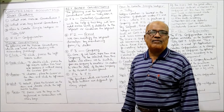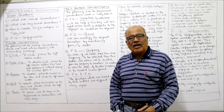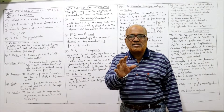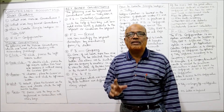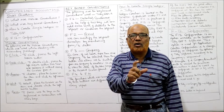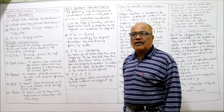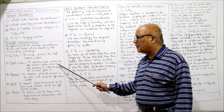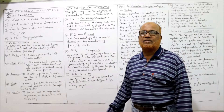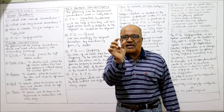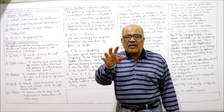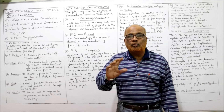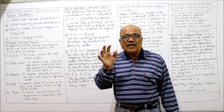Every mouse has two buttons — a left button and a right button. Click means to press the left button of the mouse. Double click means to press the left button of the mouse two times and release it without moving the cursor from that position. Keep the cursor at a particular position and click the left button twice — that is called double click.